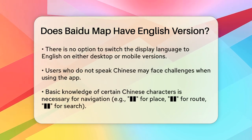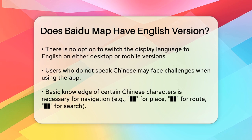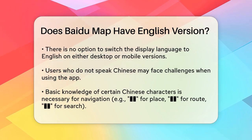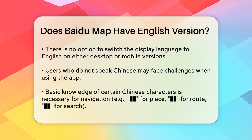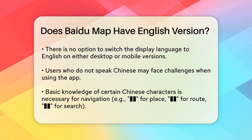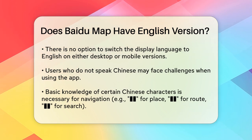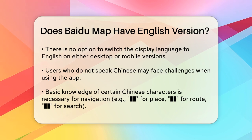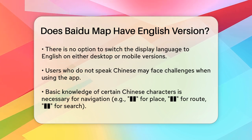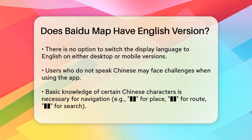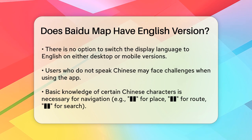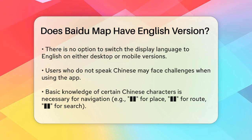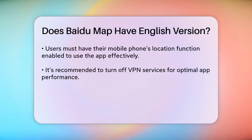However, when it comes to language, Baidu Maps does not offer an English version of its interface. When you open Baidu Maps on your desktop or mobile device, you'll find that everything is in Chinese. There is no option to switch the display language to English, and even App Store descriptions and user reviews highlight the lack of an English language option.